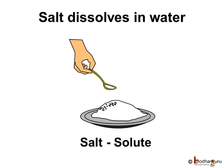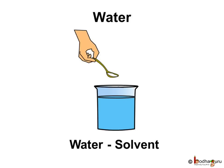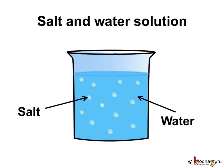The substances which dissolve in the liquid are called solute, so sugar and salt are solutes. The liquid in which the substance or solute is dissolved is called a solvent, so water is a solvent. And when a solute is dissolved in a solvent it is called a solution.